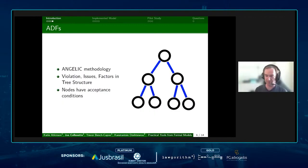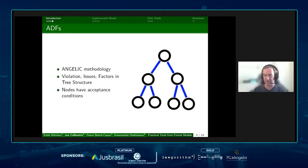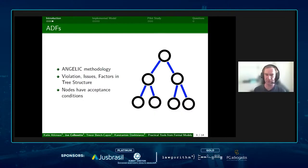Our model is implemented as an Abstract Dialectical Framework, or ADF, using the ANGELIC methodology, which represents case law as a factor-based hierarchy. You can represent this as a tree structure: at the root node you have a violation, then children which are the issues, and the children of those issues are the factors, which can be base-level factors or abstract factors. Each node in this tree has acceptance conditions to say whether that abstract factor or issue is accepted.